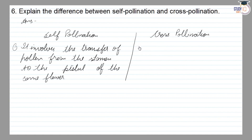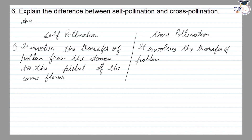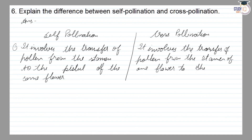The first point of cross-pollination: it involves the transfer of pollen from the stamen of one flower to the pistil of another flower.